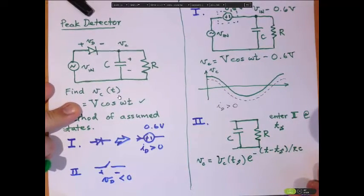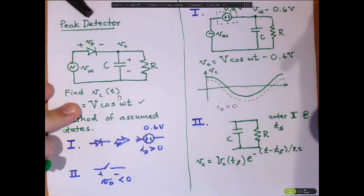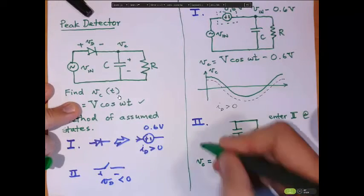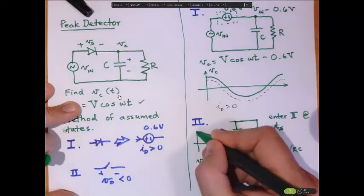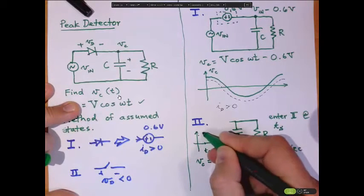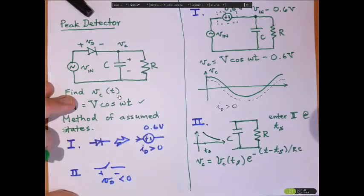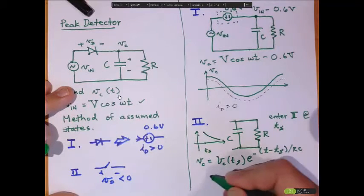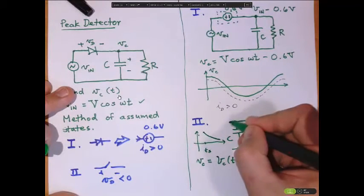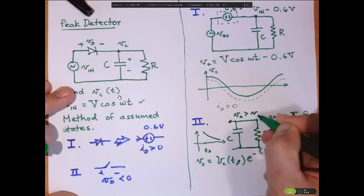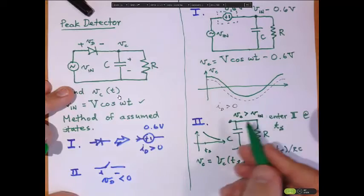Alright, so this gives us a good form, but again, we don't know what Ts is. And now if we remind ourselves, let's just sketch what that behavior is. It's just the exponential decay from Ts. So if this is Ts, then it's going to be some exponential decay. That's only going to be valid when Vd is less than zero. Or basically, when this node, Vc, is greater than Vn.